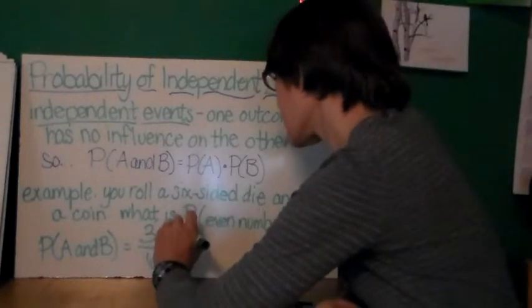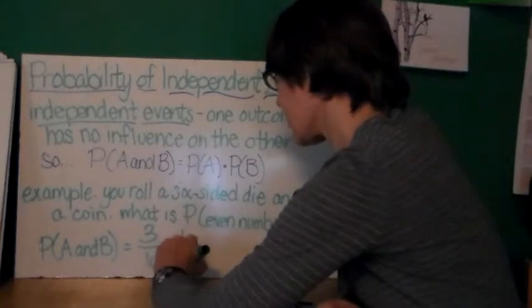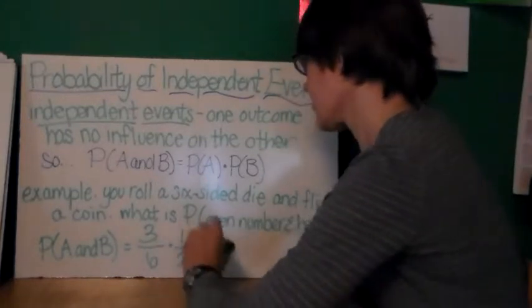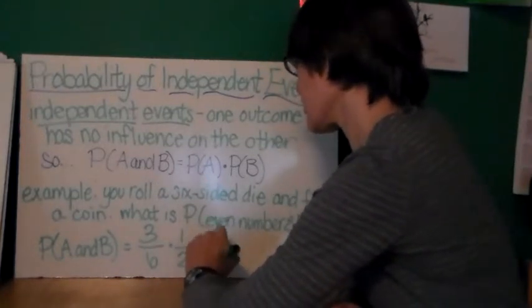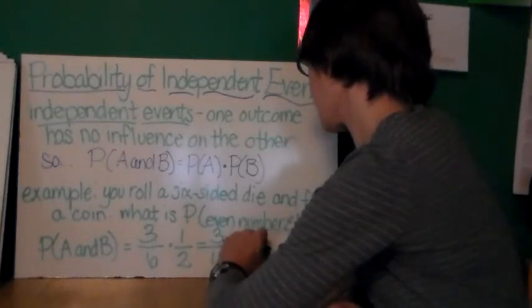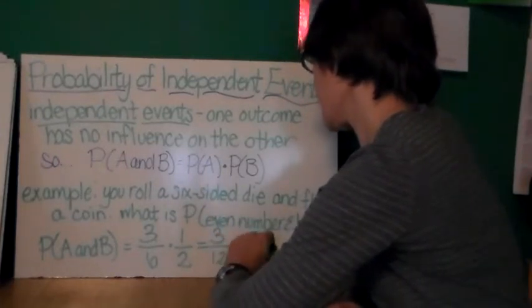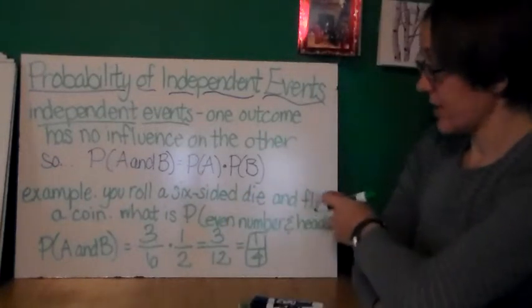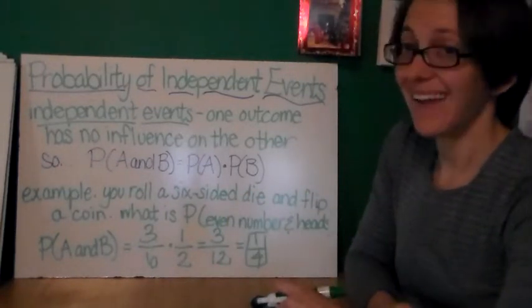And flipping the coin, well, it can land either heads or tails. So that's one out of two. So when I multiply this, I get three over 12 or one-fourth. Now you'll notice this is that it occurs even numbers and heads.